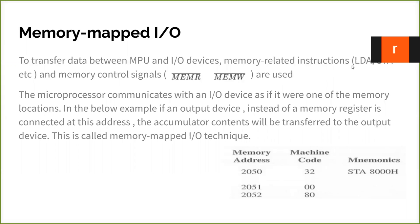When you say LDA, after LDA you have a 16-bit address, which is nothing but a memory address. If the same 16-bit address is connected to an I/O device and you use LDA, or STA, and then the 16-bit address in order to access the particular I/O device which has that address, then we call it memory map I/O. So the microprocessor communicates with the I/O device as if it is one of the memory locations.